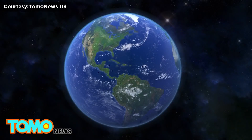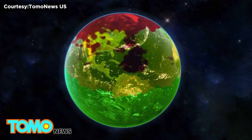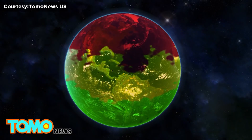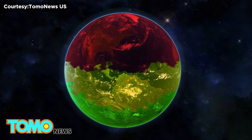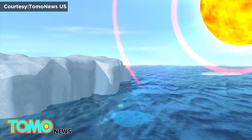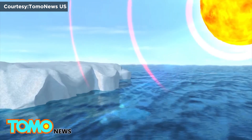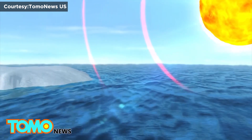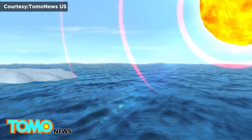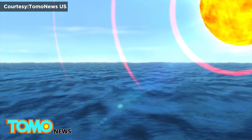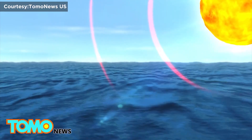Arctic amplification refers to the faster warming of the Arctic compared to the rest of the northern hemisphere as sea ice disappears. It is fueled by a feedback loop: rising global temperatures are melting Arctic sea ice, leaving dark open water that absorbs more solar radiation, further warming the Arctic.